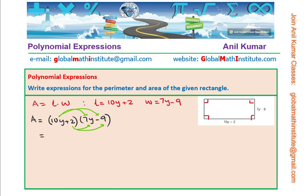So, we get 10y times 7y as 70y squared and then with 9 minus we get minus 90y. Multiplying by 2, we get plus 14y and then minus 9 times 2 gives us negative 18. Now, here we can combine the like terms. As you can see, these are the two like terms. Let us combine them and write down the final answer which will be 70y squared and minus 90 plus 14 will give us what? Taking away 14 from 90, we get 76 negative.